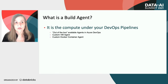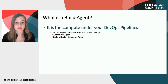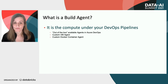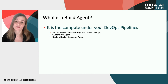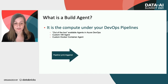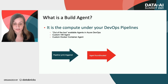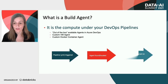Build agents: what is a build agent? It is the compute under your DevOps pipeline. There are lots of out-of-the-box available agents in tooling such as Azure DevOps, but you can create your own custom VM agent or a custom Docker agent to perform the same tasks. In your pipeline you define some YAML, and then your agent lives under the hood — it picks up your YAML when you trigger it and processes all the steps.